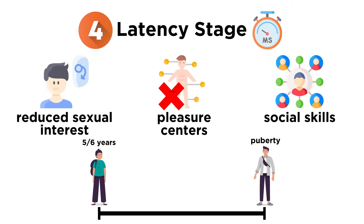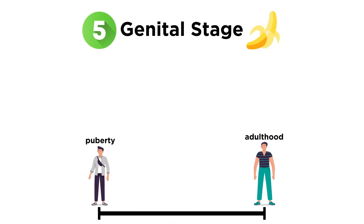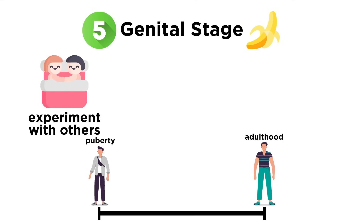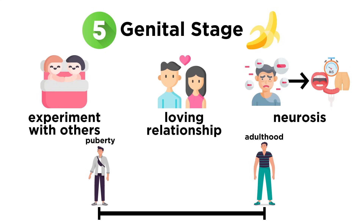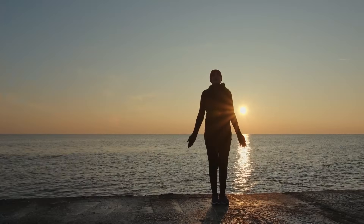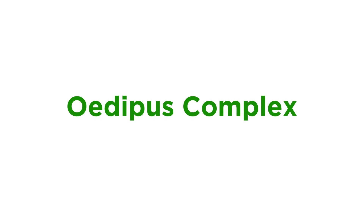The final stage of psychosexual development is the genital stage. The genital stage lasts through puberty and ends at adulthood. In the genital stage, we experiment sexually with others. The genital stage ends when we are in a loving, stable relationship with another person. Freud argued that neurosis and perversion were the result of people getting stuck in or regressing to one of these previous stages. If a person can get to the genital stage and remain there, they will be a well-balanced, healthy adult.